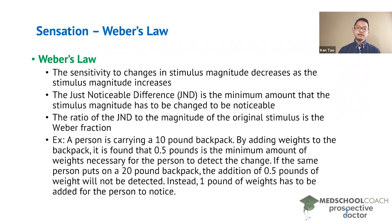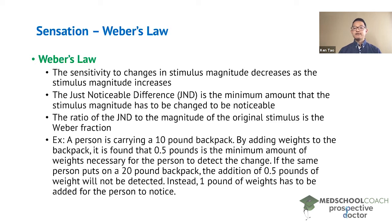We can better understand how this works with an example. Let's say you have a person carrying a 10 pound backpack and you start adding weights to find out how much weight has to be added for the person to detect a change. If a 0.5 pound weight is required to be added for the person to detect the change, then the just noticeable difference is 0.5 pounds and the Weber fraction is 0.5 divided by 10, or 5%. This implies that a 5% change in the stimulus magnitude is required for that change to be detected.